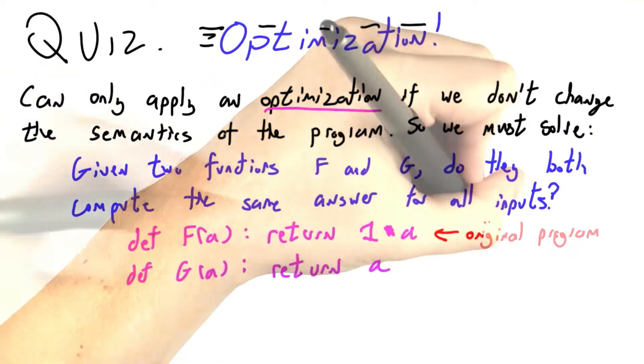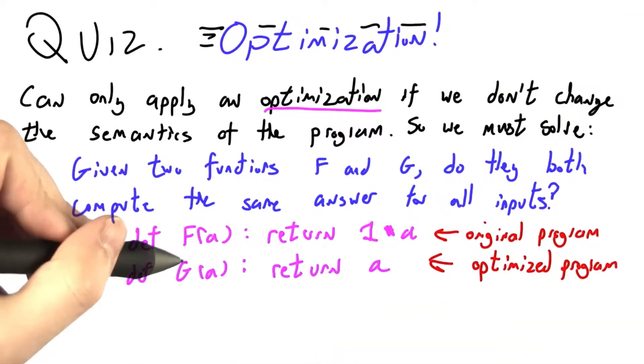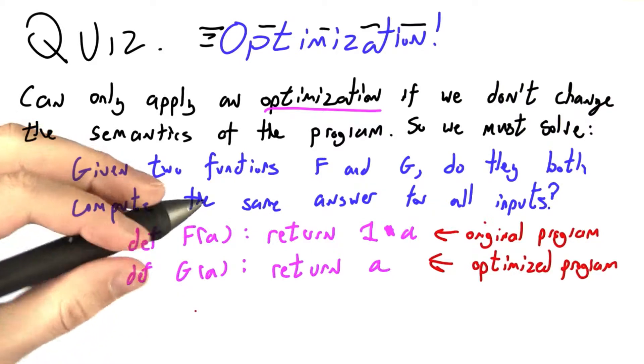but let me firm it up with a concrete example. It might be that f is the original program, and g is the candidate optimized program. If they compute the same answer on all inputs a, then we can replace f with g wherever it occurs.